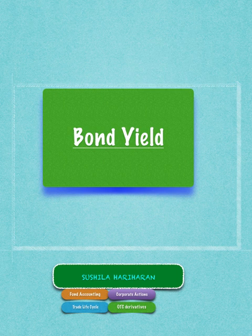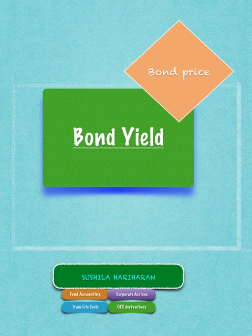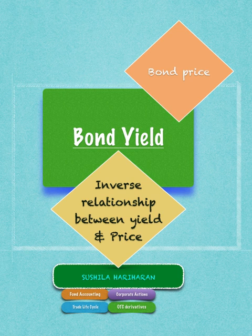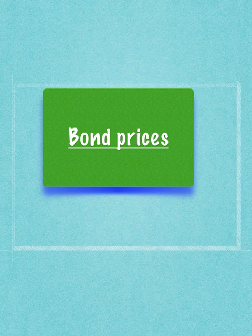Bond yields are a function of coupon, which is announced by the company, and bond price, which is determined by the markets. Yield is equal to coupon divided by bond price, and therefore there's an inverse relationship between yield and bond prices.